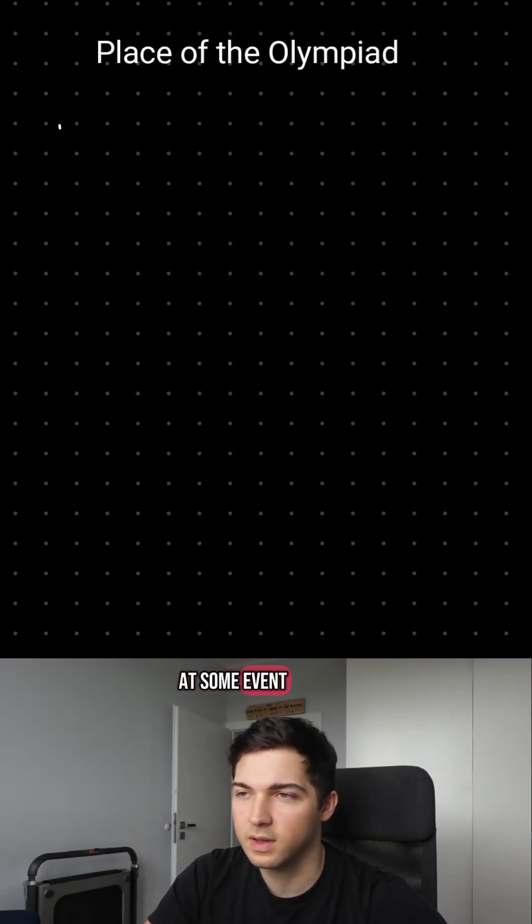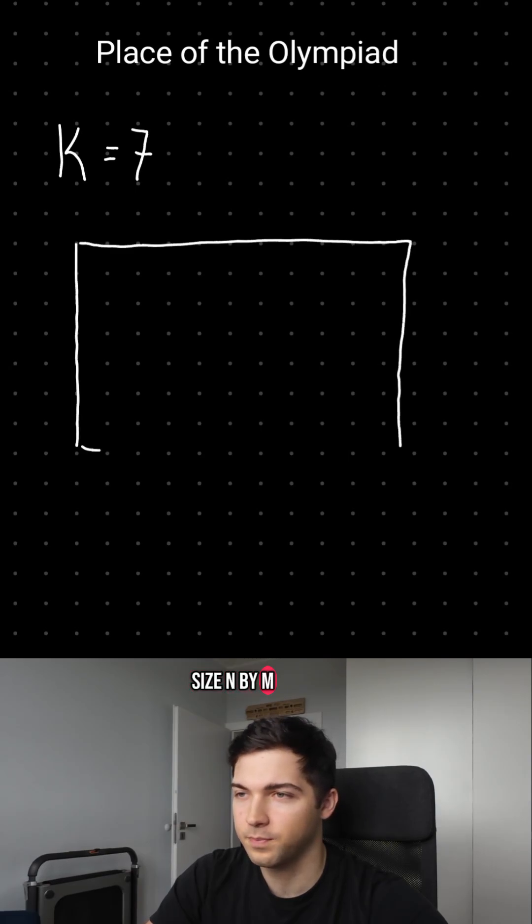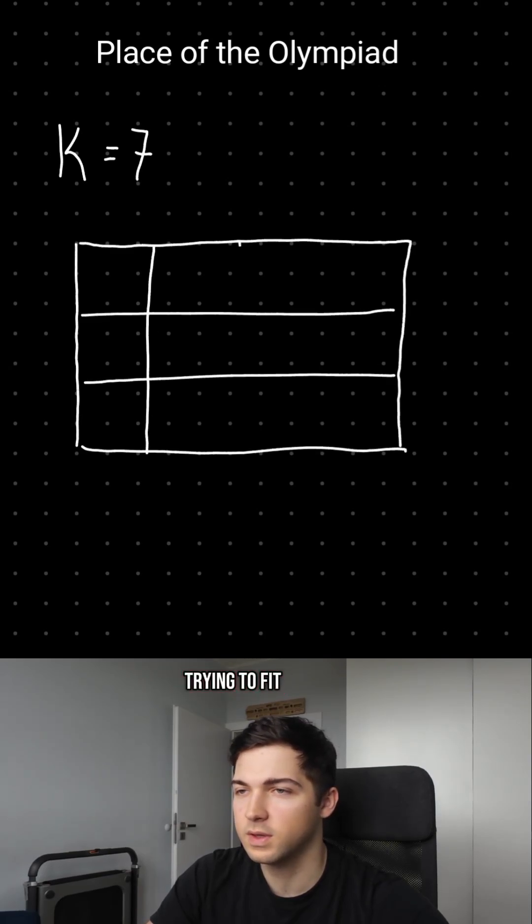We are trying to seat k people at some event and there are seats arranged in a grid of size n by m. The number of people we are trying to fit is k which might be smaller than n times m.